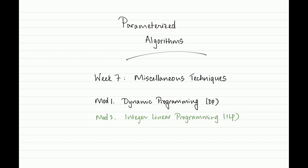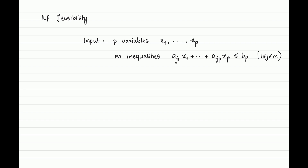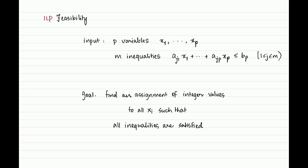To keep this discussion self-contained, let's start by defining what an integer linear program is. The ILP feasibility problem has as input a collection of p variables and a system of m constraints over these variables, described with inequalities. Part of the 'integer' in integer linear programming comes from the fact that the coefficients — the a_i's and the b's — are supposed to be integers. We are also expected to find an integer solution to this system.